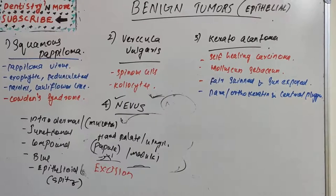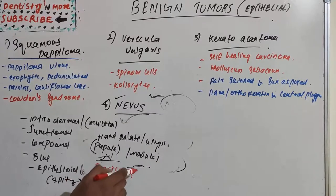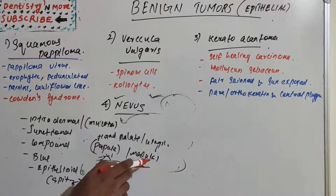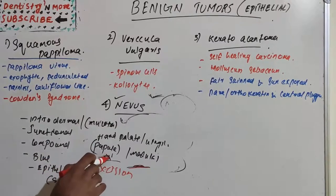The second type is junctional nevus, a benign brown-to-black lesion occurring primarily on the skin and occasionally on the oral mucosa. Within the oral cavity it usually appears as a pigmented macule on the hard palate or gingiva — a macule being a color change without significant elevation, unlike a papule which is elevated.